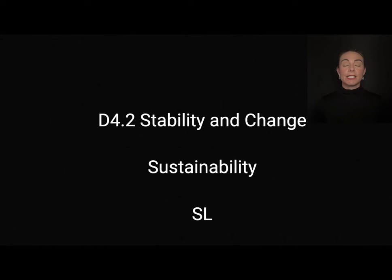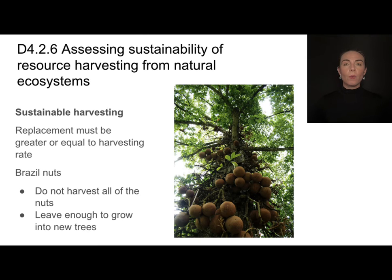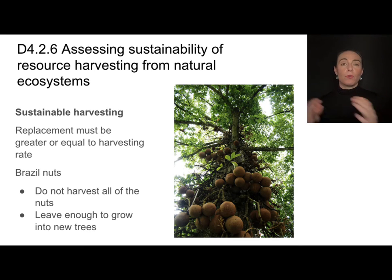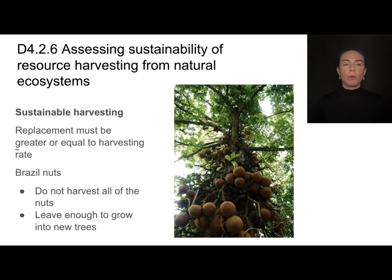In this video, we'll take a look at sustainability, which is standard level content from D4.2 on stability and change. One of the things that can disrupt ecosystems is the removal of materials. So in order to promote ecosystem stability, we need to make sure that the harvesting we do is sustainable — meaning the rate at which we remove materials is less than or equal to the rate at which they can be replenished.